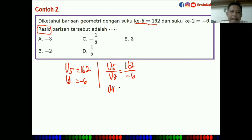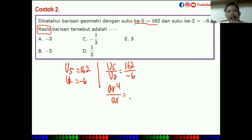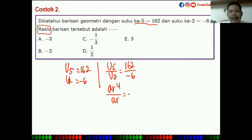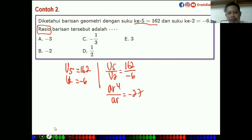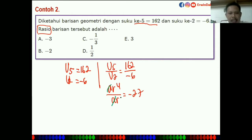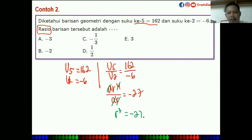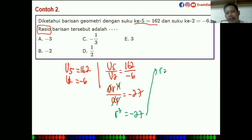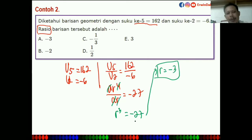U5 = AR⁴ dan U2 = AR¹. Maka 162 dibagi -6 = -27. A-nya habis, tinggal R³ = -27. Berarti R = -3, karena (-3)³ = -27.